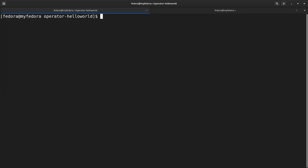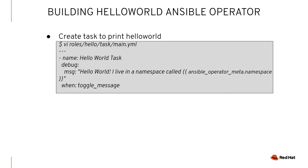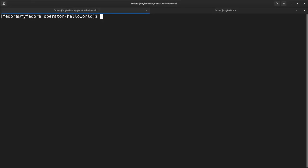We're going to add a task — just printing a hello world — but I'm showing you how to get information from the CR. The CR is a custom resource, which is how a user interacts with an operator and with the CRD, the operator API endpoint. We're able to get parameterized information from the user to make decisions in our operator, such as what namespace the CR is created in. We're only printing the message when the boolean toggle_message is set to true, allowing users to configure whether they see this message.